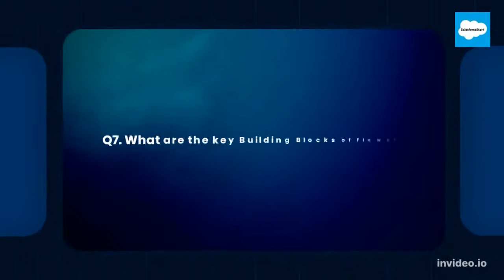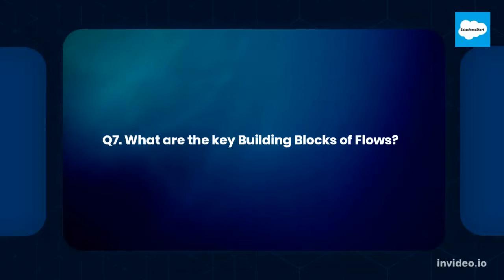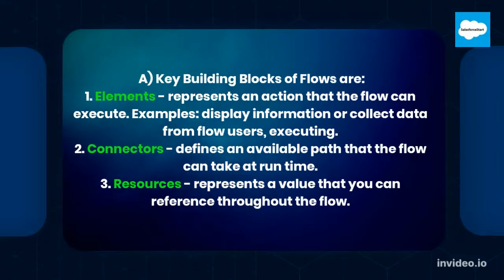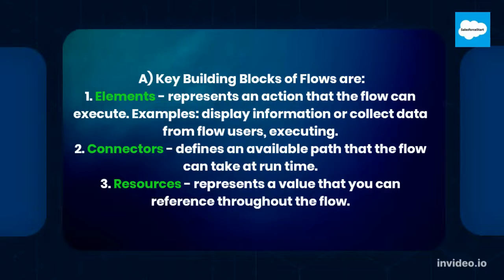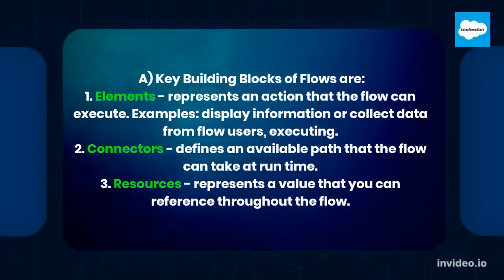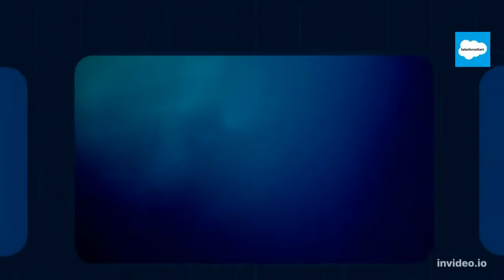Question number seven: What are the key building blocks of flows? Answer: The key building blocks of flows are: one, Elements — represents an action the flow can execute, examples include displaying information or collecting data from flow users; two, Connectors — defines an available path that the flow can take at runtime; three, Resources — represents a value that you can reference throughout the flow.